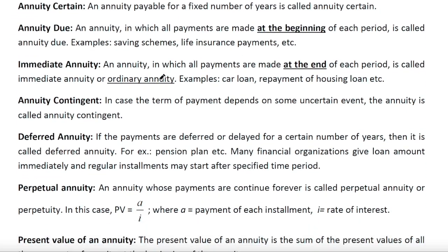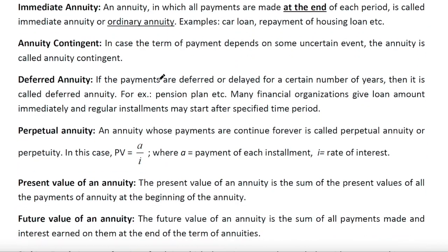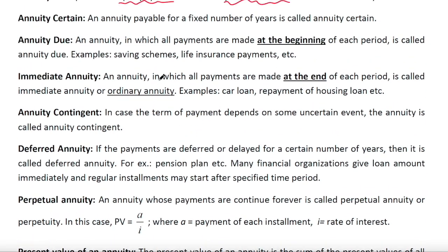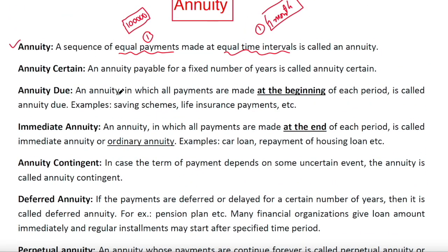There are several types of annuity. The first one is annuity certain — an annuity payable for a fixed number of years is called annuity certain. Annuity certain is of two kinds: annuity due and immediate annuity.